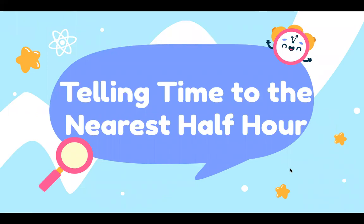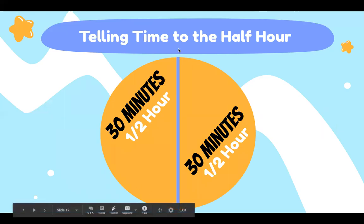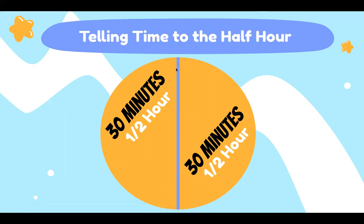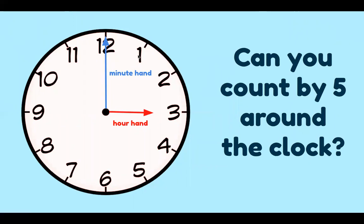Now let's see if we can work on telling time to the nearest half hour. A half hour is 30 minutes. So in our whole clock if we cut it in half there's 30 minutes on one side and 30 minutes on the other. Let's first look at our clock. So can you count by five? When we look at our clock these are the numbers that tell us what hour it is. We just looked at that.